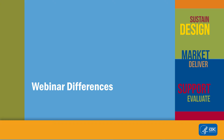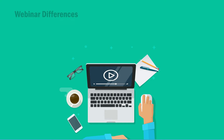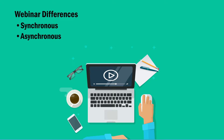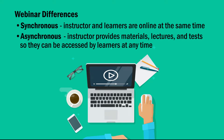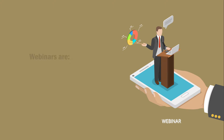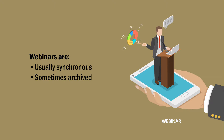Webinars can be subcategorized as either synchronous or asynchronous. Synchronous learning means the instructor and learners are online at the same time. Asynchronous learning is when the instructor provides materials, lectures, and tests so they can be accessed by learners at any time. Webinars are usually synchronous learning, but occasionally they are archived so that they can be viewed by participants at a later date.